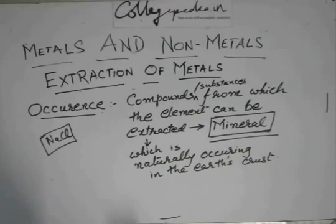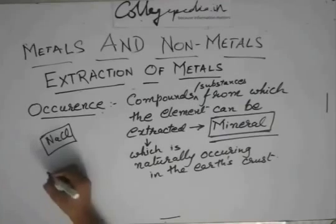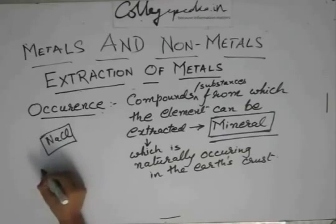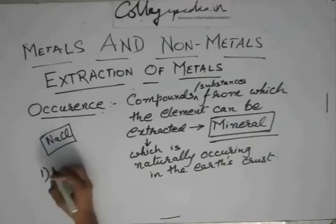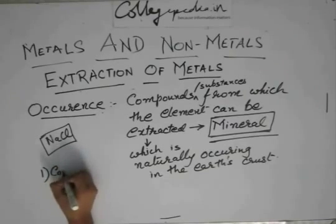So there are two points for a compound to be called a mineral: it should contain the required element, and it should be naturally occurring in the earth's crust.